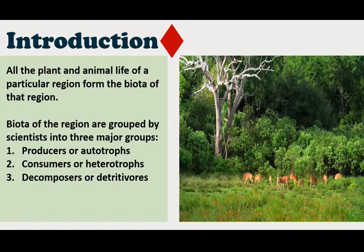Types of biotic factors. Scientists have grouped the biota of a region into three major groups which determine their role in the flow of energy, which all living things in an ecosystem need to survive. These groups are producers or autotrophs, consumers or heterotrophs, and decomposers or detritivores.